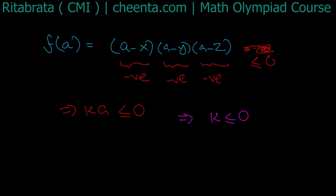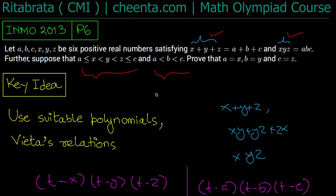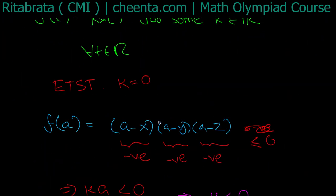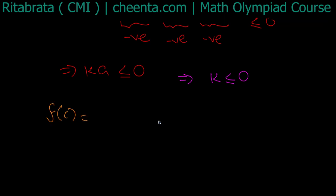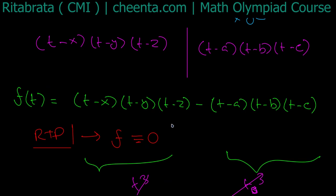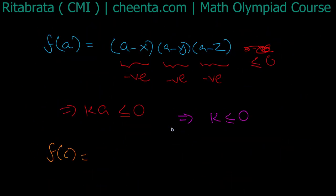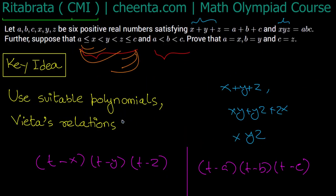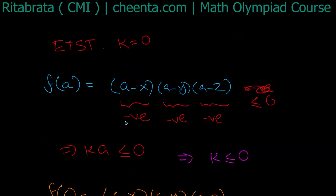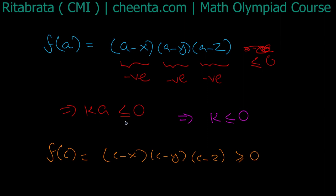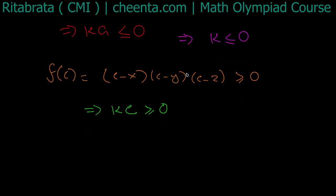Now, a is smaller than x, y, z and c is bigger than all of them, so it's convenient to consider f(c). We have f(c) = (c − x)(c − y)(c − z). Since c ≥ z > y > x, all three factors are non-negative, so f(c) ≥ 0. But f(c) = k·c and c > 0, so k ≥ 0.